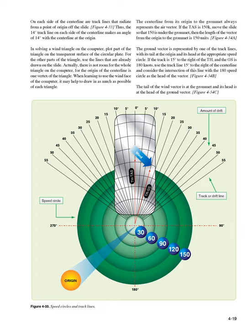If the TAS is 150 knots, move the slide so that 150 is under the grommet; then the length of the vector from the origin to the grommet is 150 units. Figure 4-34a. The ground vector is represented by one of the track lines, with its tail at the origin and its head at the appropriate speed circle. If the track is 15° to the right of the TH and GS is 180 knots, use the track line 15° to the right of the center line and the intersection with the 180 speed circle as the head of the vector.